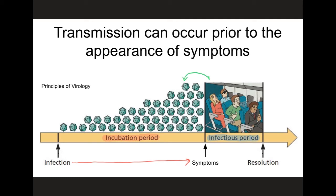However, for SARS-CoV-2, these two periods actually overlap. This is really important because it means it's possible to transmit the virus to others before you even know that you're sick. With this virus, we also know that a large percentage of infected individuals will never actually experience any symptoms associated with that infection, but these people can still transmit the virus. And this is why it's so important for everyone to wear masks in public spaces, regardless of whether they've experienced symptoms of this disease.